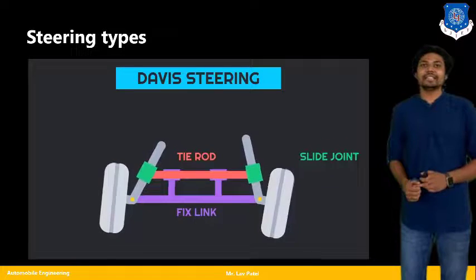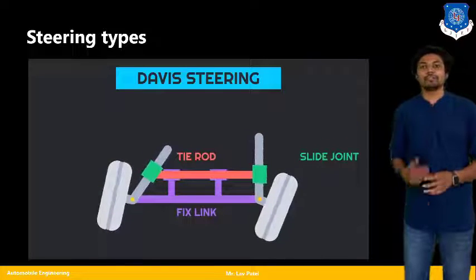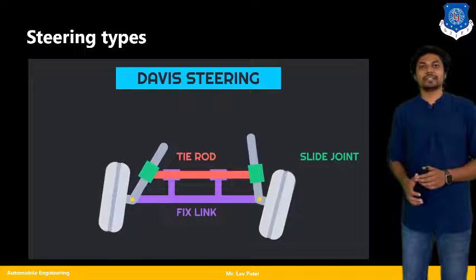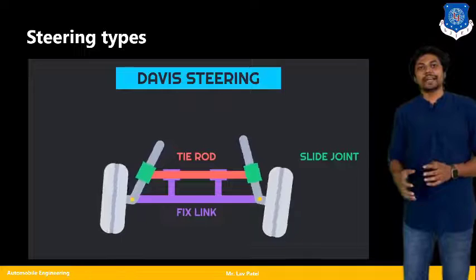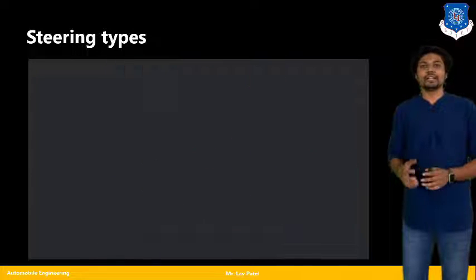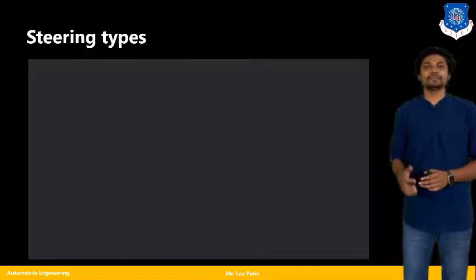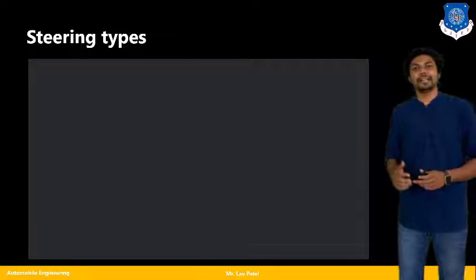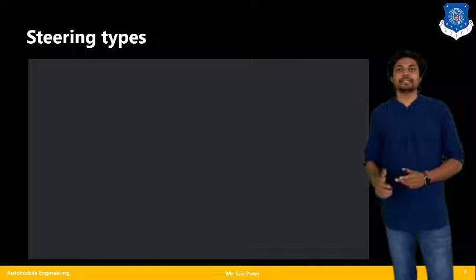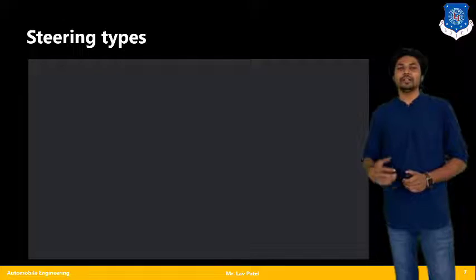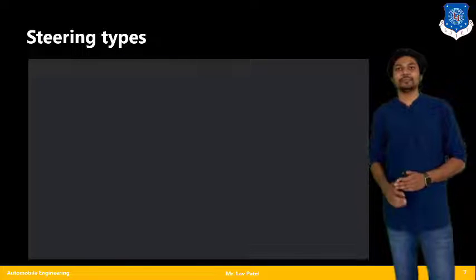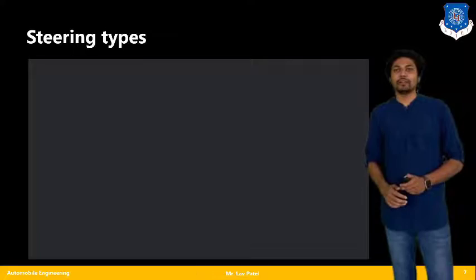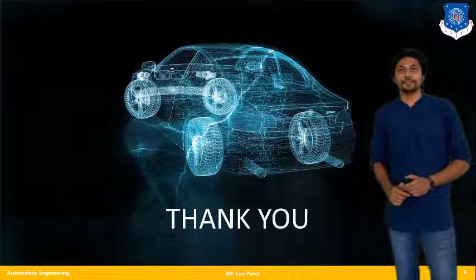You can see that Davis steering has a lot of mechanical components attached to it. Because of so many mechanical components, we find very high friction in this kind of steering system, and it is a very complicated type of steering system. So this covers all three types of steering systems. That is all for today's lecture. Thank you.